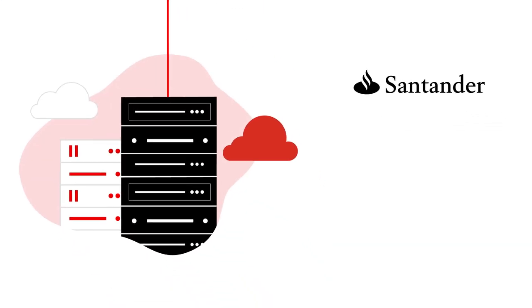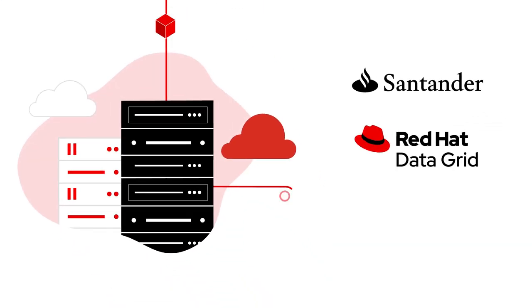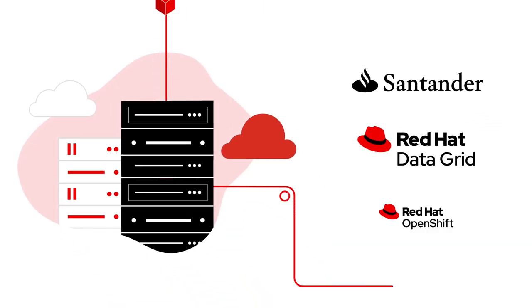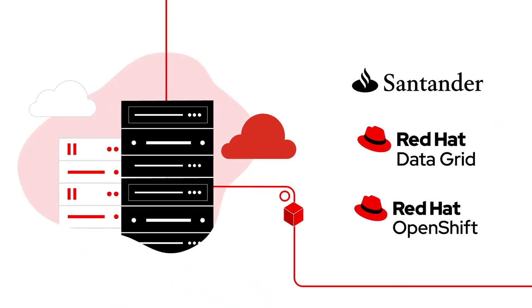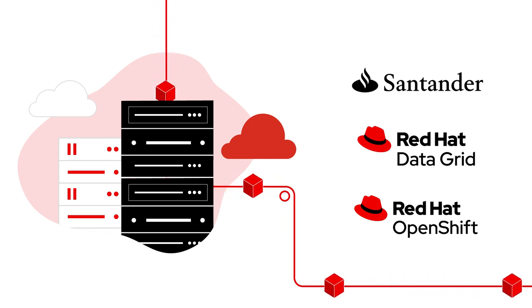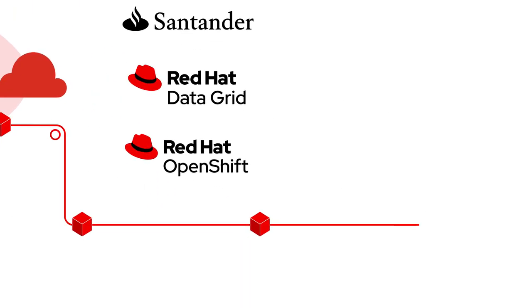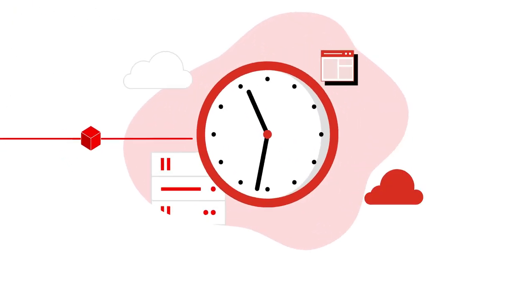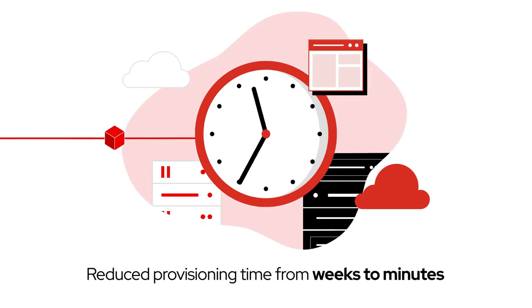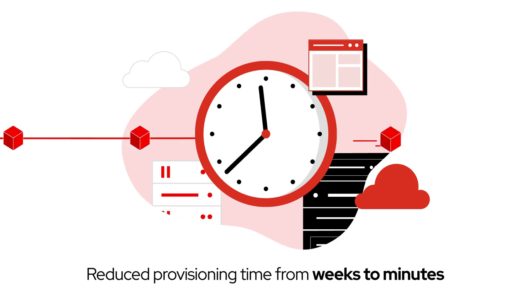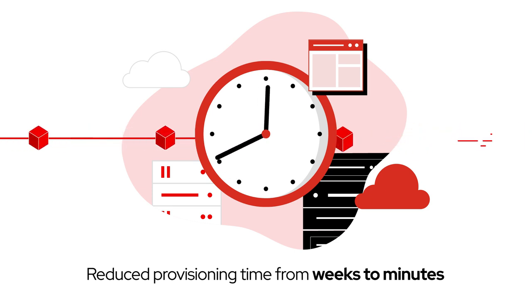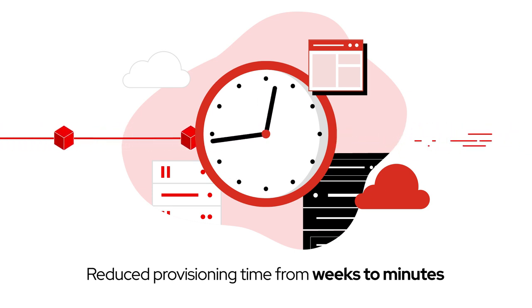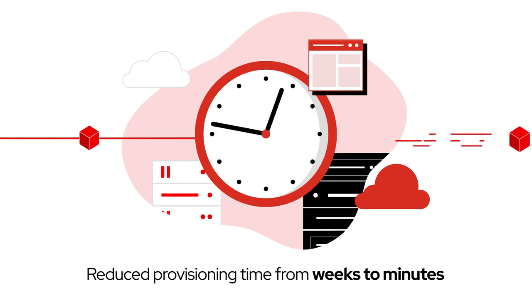Organizations like Santander use Red Hat Data Grid on Red Hat OpenShift to run their containerized big data applications. As a result, they reduced provisioning times from several weeks to only 10 to 12 minutes.